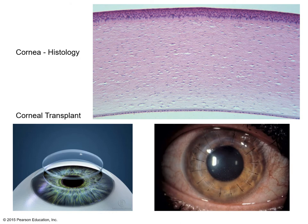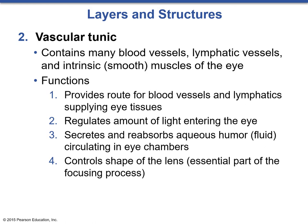The next deepest layer is the vascular tunic, which contains many blood vessels, lymphatic vessels, and intrinsic smooth muscles of the eye that help to control the lens and the pupil. The functions of the vascular tunic include providing a route for blood vessels and lymphatics to supply eye tissue, regulating the amount of light entering the eye, secreting and reabsorbing aqueous humor — a fluid that circulates in the anterior part of the eye — and controlling the shape of the lens, which is essential in the focusing process.